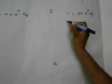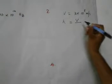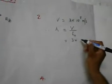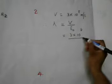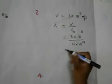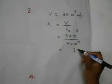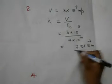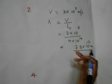For the second part, to find the threshold wavelength, we know that the speed of light is 3 × 10⁸ m/s. Therefore, the wavelength is the speed divided by the cutoff frequency: 3 × 10⁸ divided by 4 × 10¹⁴, giving an answer of 7.5 × 10⁻⁷ metres.